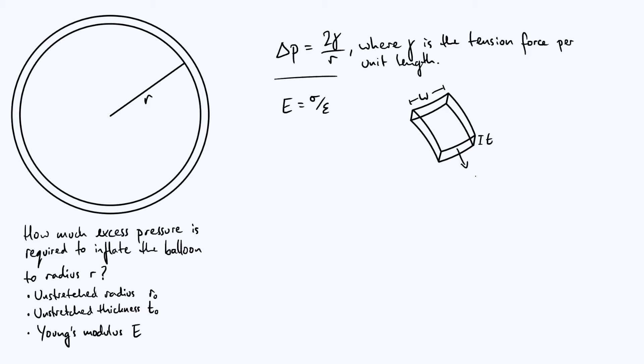We defined γ to be the tension force per unit length within the surface of the balloon skin, and so we just take γ, multiply that by the length within the skin of the balloon, which is W, the width of the element, so the force is γW.